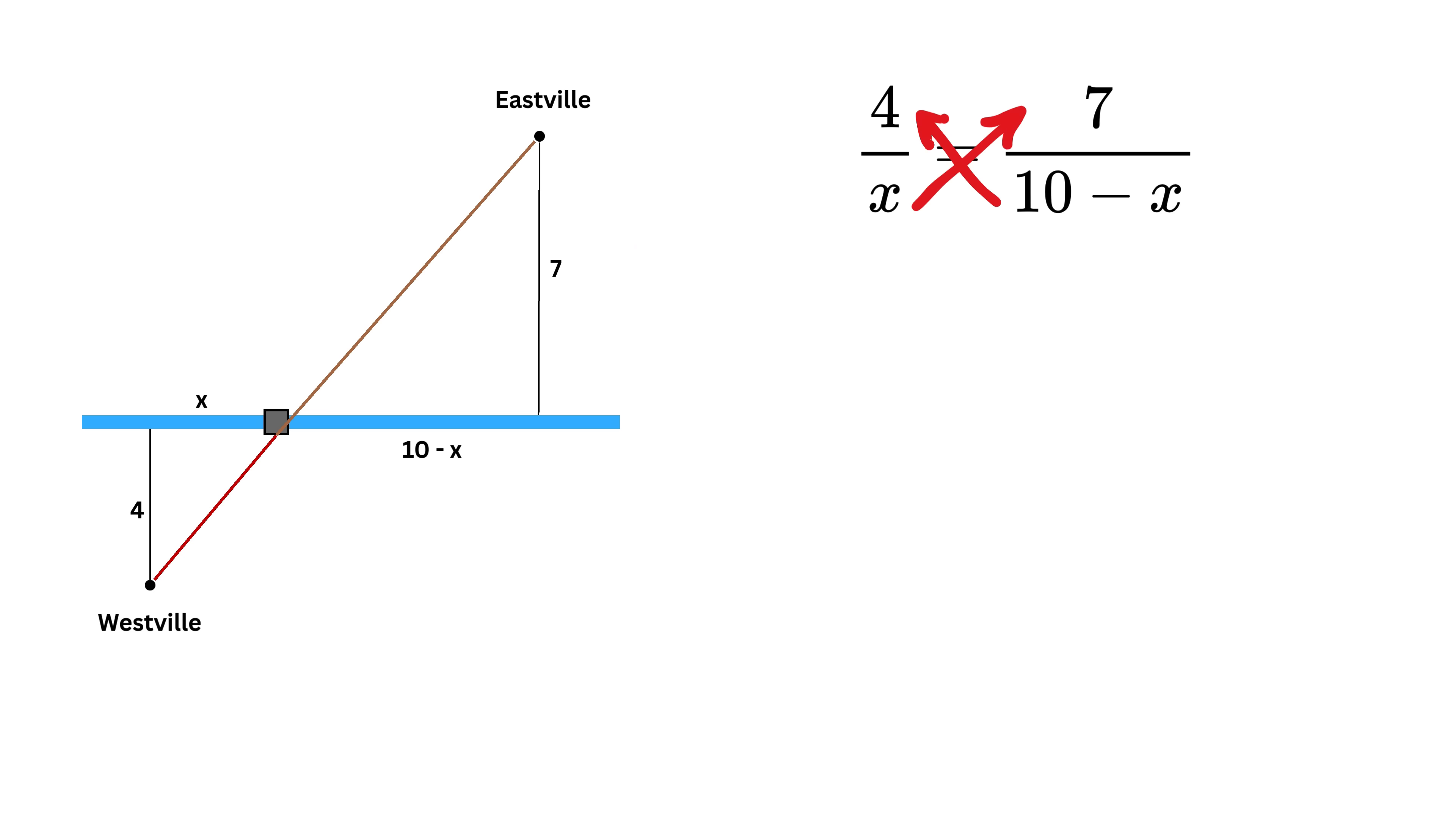Cross multiply to get four times ten minus x equals seven x, or forty minus four x equals seven x. Take four x here to get seven plus four, or eleven x equals forty, and thus x equals forty over eleven, which is nearly three-point-six-four miles. And that's it.